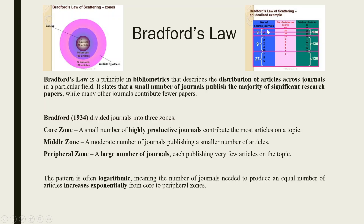Let's understand with an example. Say the number of core source journals is 3 — let's say these journals are related to entrepreneurship — and we can get 130 articles from them. If we require more articles, in zone 1 we need 9 journals, because these are not the core journals, to get another 130 articles. And in zone 2, we will have to refer to 27 journals to get another 130 articles.